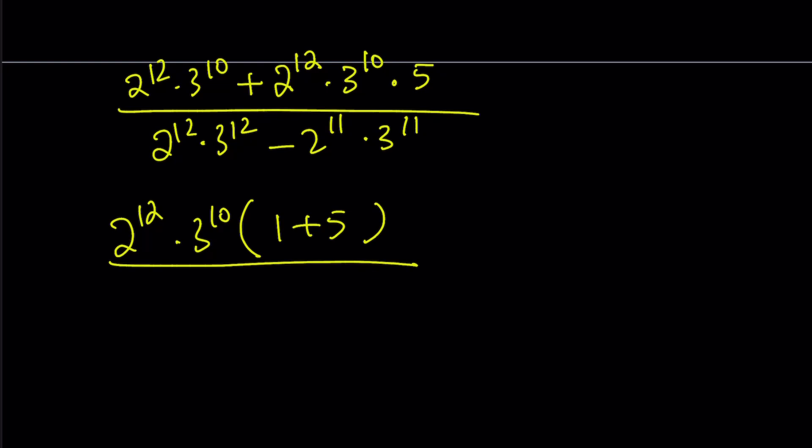And then at the bottom, we notice that one of the terms has 2 to the 12th, the other one is 2 to the 11th. So we have to go with the smaller one. And with the 3, again, we have to go with the smaller 3. But that kind of gives us 2 times 3 minus 1, which is 6 minus 1, which is 5 obviously.